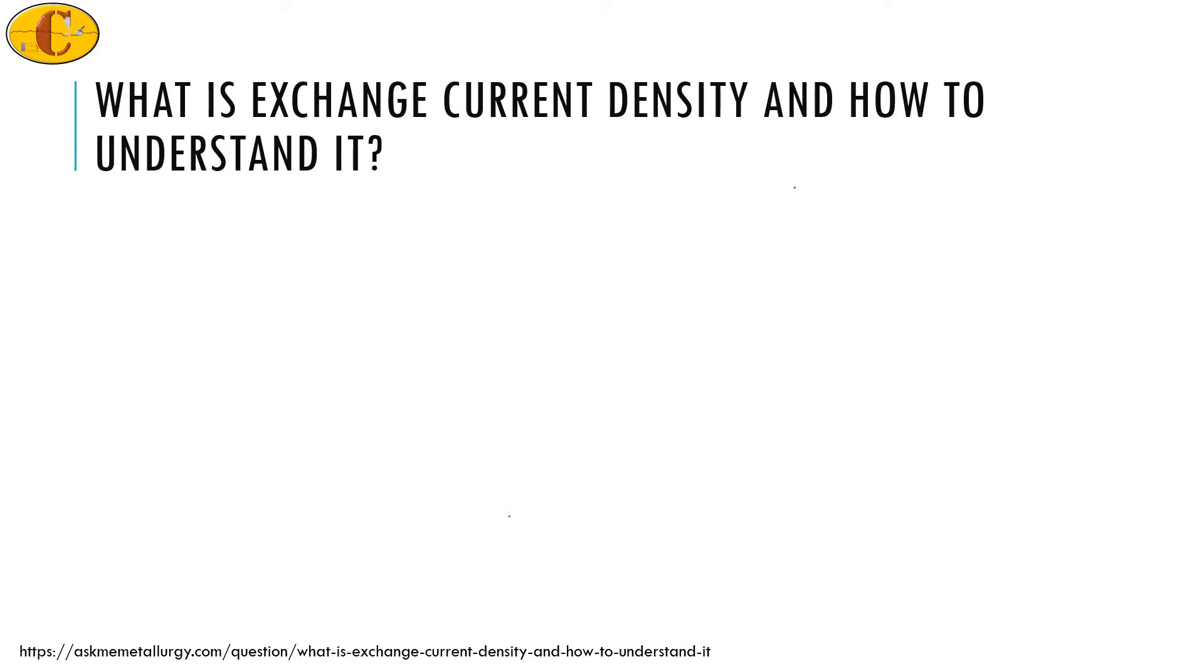Exchange current density is usually observed when you have this Evans diagram with the electrode potential and the current. Over here is supposed to be the exchange current density.